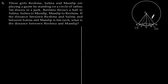Consider this is our required figure based on the information given in the question. R represents Reshma, S represents Salma and M represents Mandip. And as given in the question, the radius of a circle is 5 meter.